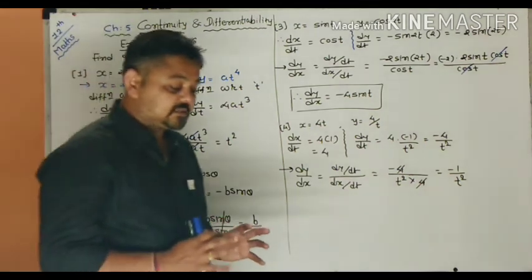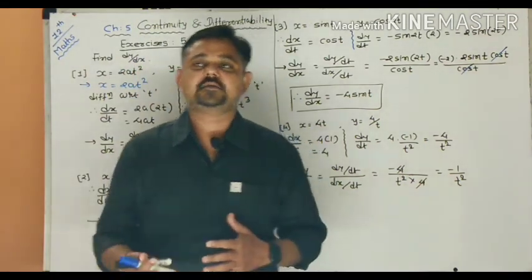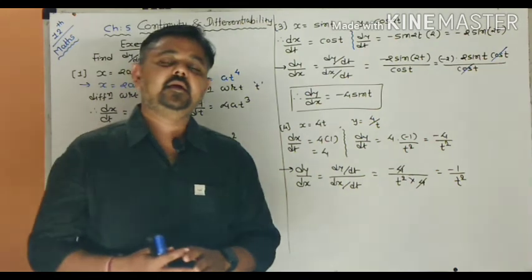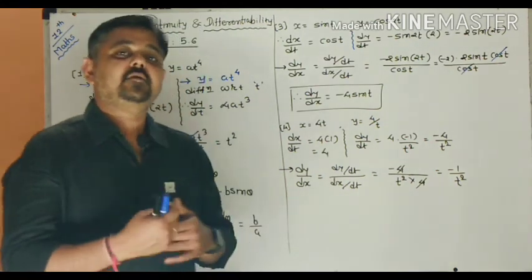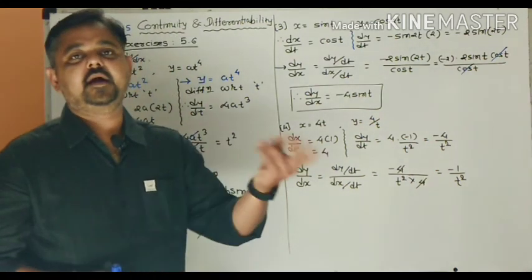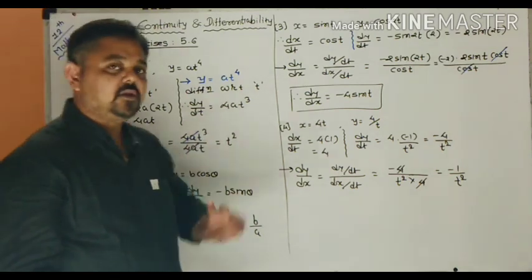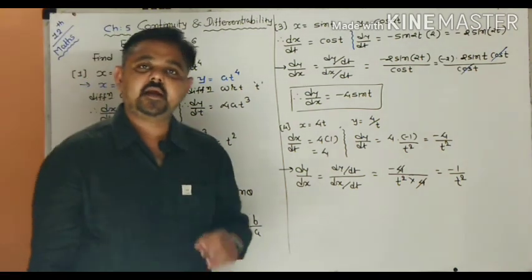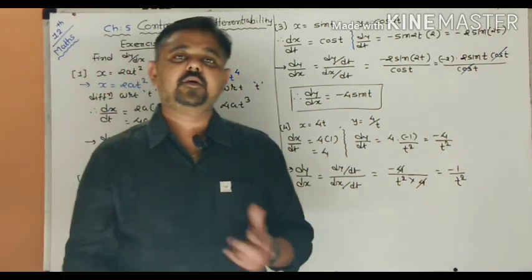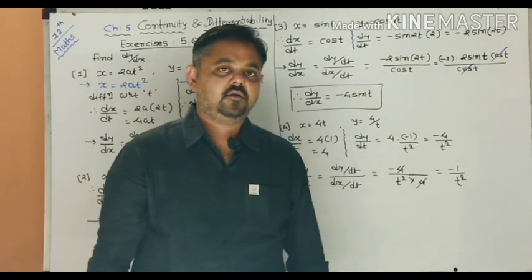These are the basic starting questions, so they are easy. Going forward, the same pattern will continue: x and y are dependent on a parameter, either theta or t. You must differentiate both with respect to the parameter to find dx/dt and dy/dt, and then divide them to find dy/dx.